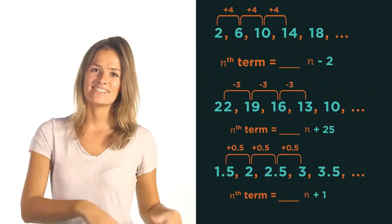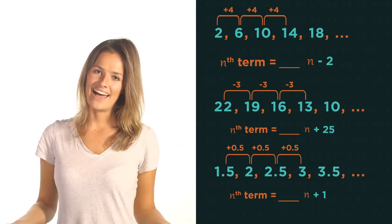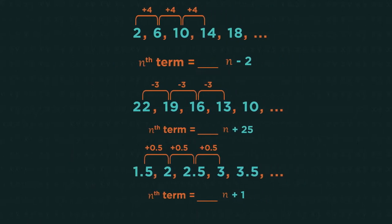Given these sequences, what numbers are missing from the nth term rules? Difference of 4, so the formula is 4n. Difference of minus 3...